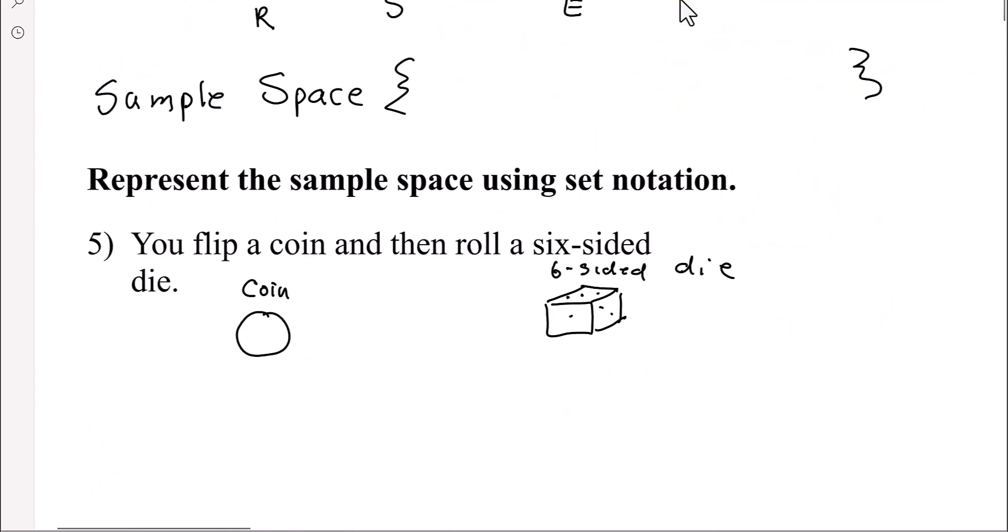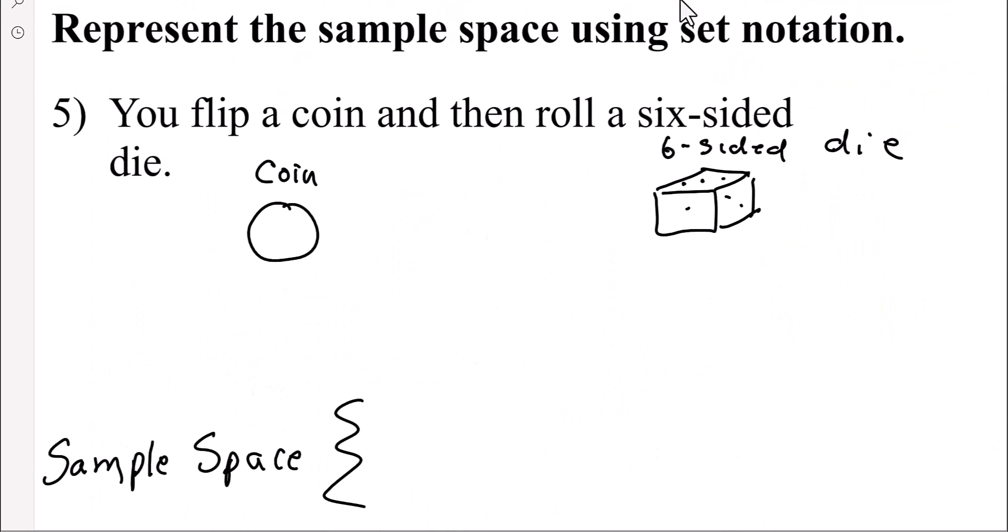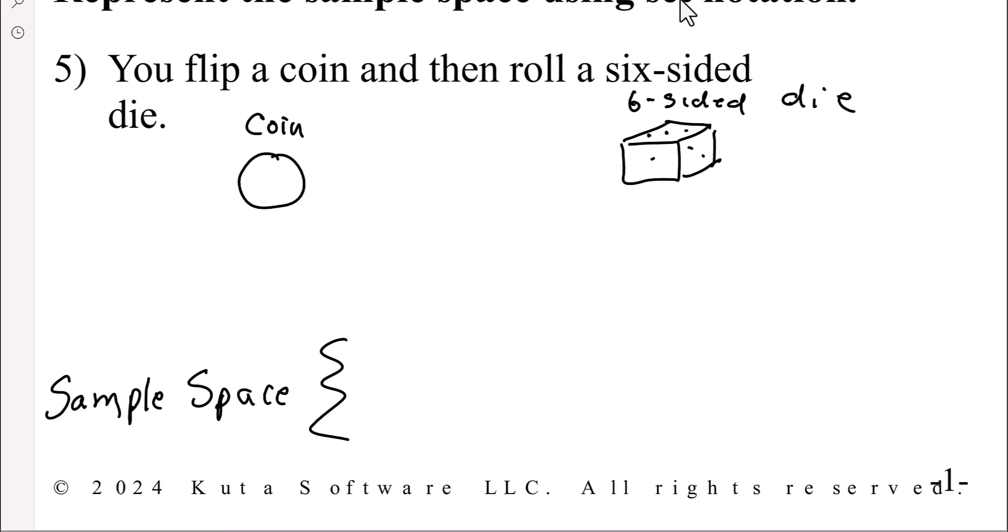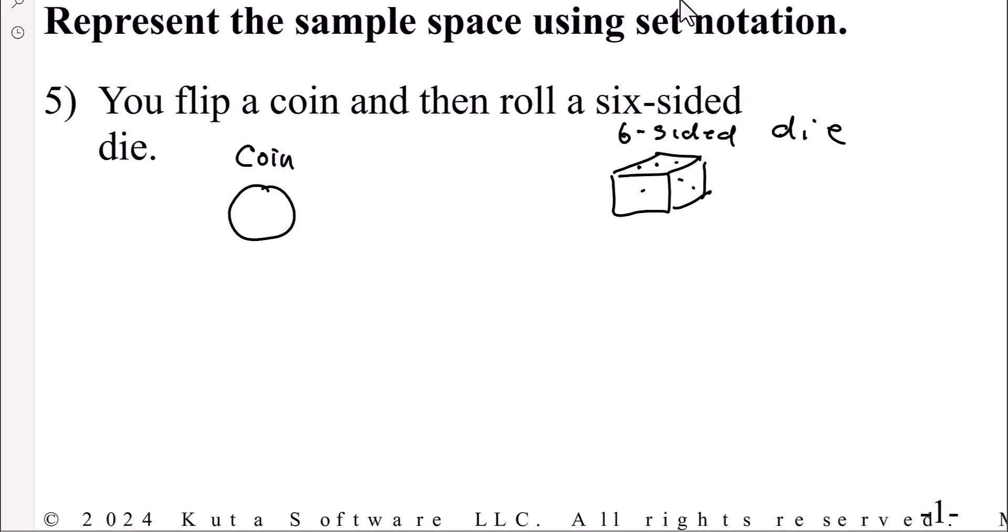Okay, let's go on to the next one. Represent the sample space using set notation. All right. This is a lot. So I'm going to have to write this small because there are six faces on a die. So in the sample space, you could roll a heads and get a 1. You could roll a tails and get a 1. Imagine you're going to do that for all of them.